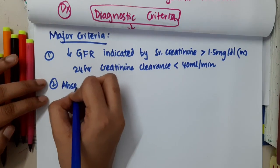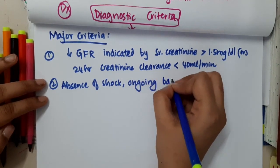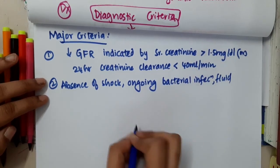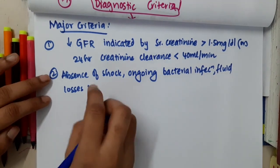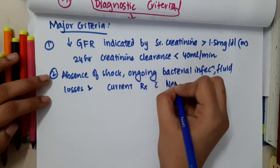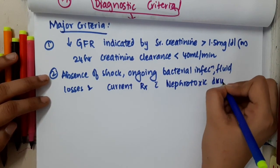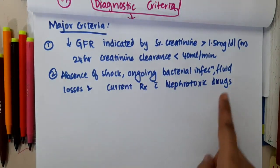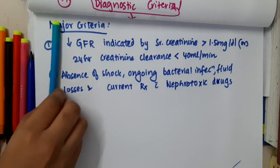Second major criteria: there will be absence of shock, ongoing bacterial infections, and fluid losses. Also, the patient is not currently on treatment with nephrotoxic drugs. All these conditions must be absent — these form major criteria number 2.